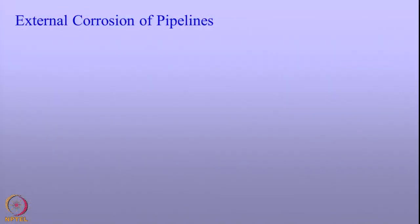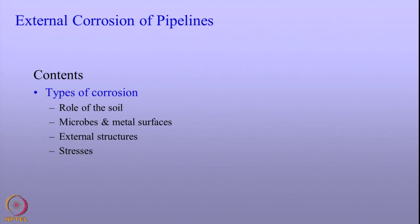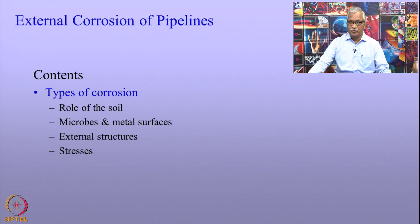Welcome to Corrosion Protection Engineering lectures. We have so far discussed two important aspects related to aqueous corrosion and the electrochemical aspects of electrochemical corrosion. Today, we will be looking at the external corrosion of pipelines. Today's lecture will focus on the types of corrosion that affect the external buried structures. We will be looking at the role of soil, microbes, metal surfaces, external structures in the vicinity of these buried structures, and the applied stresses, and how they affect the external corrosion of pipelines.